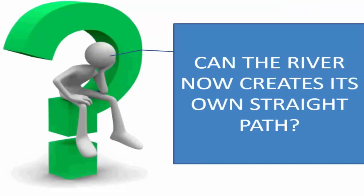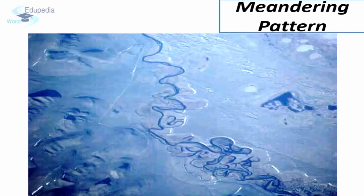Can the river now create its own path? The answer is no. Since the water has lost its power due to low velocity, it does not create its own straight path. It prefers to move around obstructions rather than breaking them and creating a straight path. The most prominent landform in the middle course is a meander or a loop. If there is an obstacle in the path of the river, it goes around the obstacle, which causes the river to meander and curve.